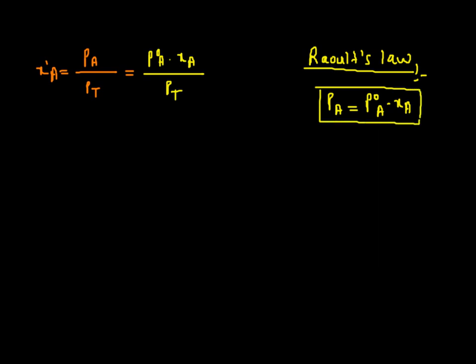In the same way, I can write the mole fraction of B in vapor phase: x'B = PB / Ptotal = (P°b × Xb) / Ptotal. So this is also the way to find the mole fraction in vapor phase.